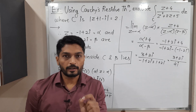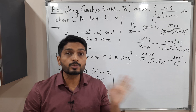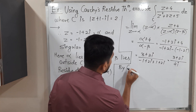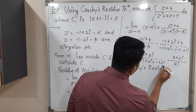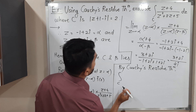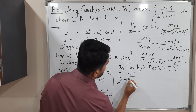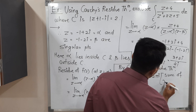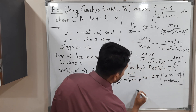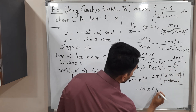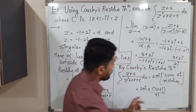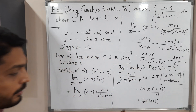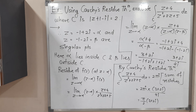Applying Cauchy's residue theorem, the integral ∫_C (z + 4) / (z² + 2z + 5) dz = 2πi × (3 + 2i) / 4i. The 2i cancels with 4i leaving a factor of 2 in the denominator, giving (π/2)(3 + 2i). This is the required value of the integration. Thank you, see you in the next video.